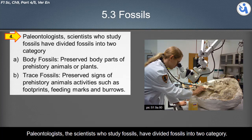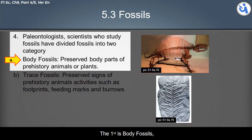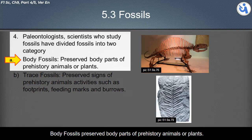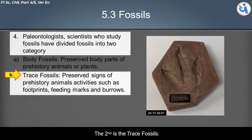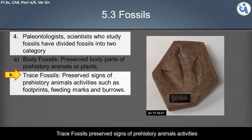Paleontologists — the scientists who study fossils — have divided fossils into two categories. The first is body fossils, which preserve body parts of prehistoric animals or plants. The second is trace fossils, which preserve signs of prehistoric animal activities such as footprints, feeding marks, and burrows.